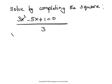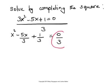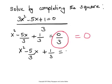And that gives 3x squared divided by 3 minus 5x divided by 3 plus 1 divided by 3, which is equal to 0 divided by 3. 0 divided by any non-zero number is 0. So we have x squared minus 5 thirds of x plus 1 third is 0 itself.